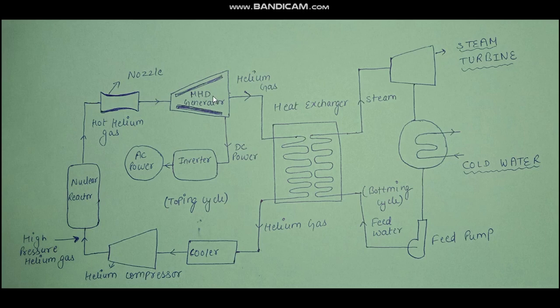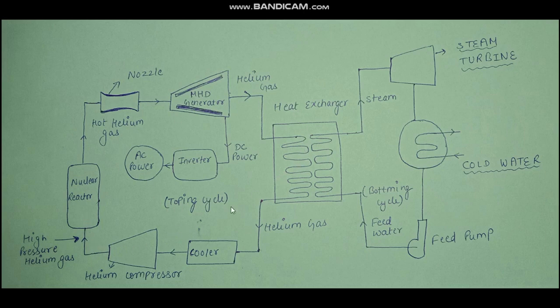The liquid potassium then leaves the MHD duct and is fed to the heat exchanger, where it transfers heat to feed water, converting it into steam. This steam is used in a conventional steam power plant. The liquid potassium then leaves the heat exchanger and is supplied back into the nuclear reactor, and the complete cycle is repeated.